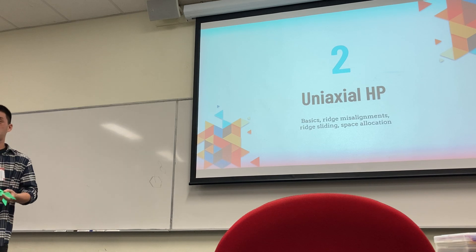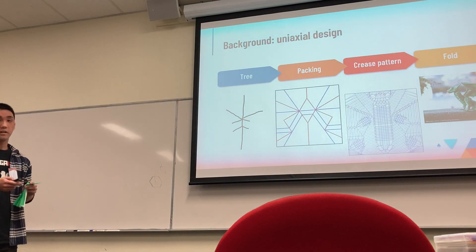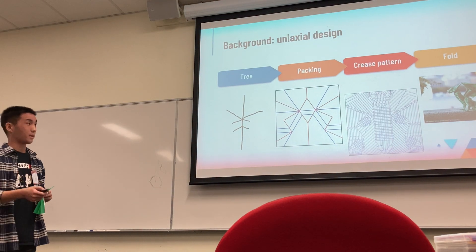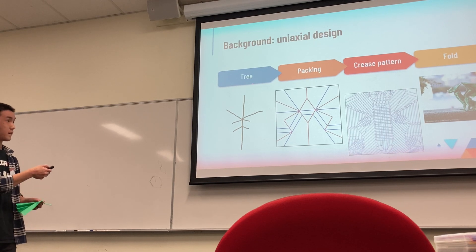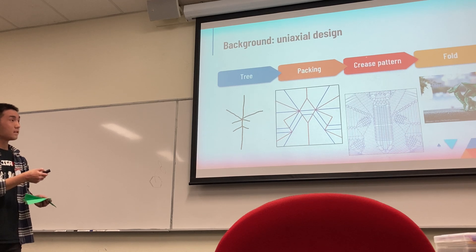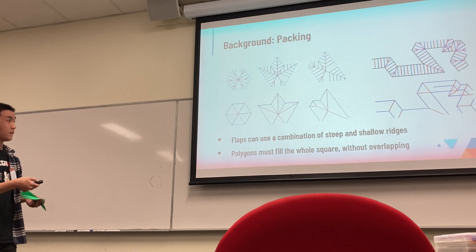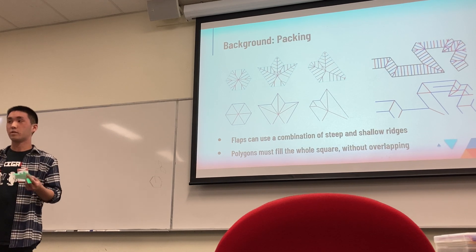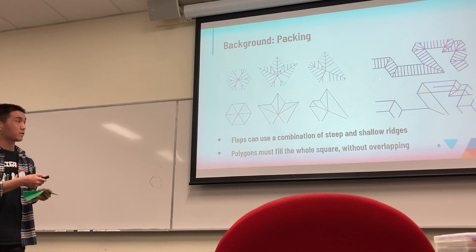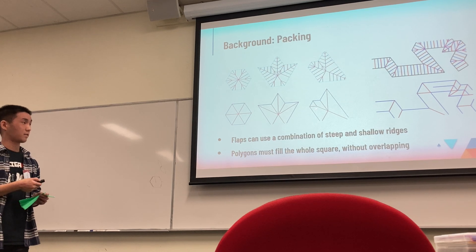Now let's look at newer techniques of uniaxial hex pleating. When designing uniaxial models using circle packing, box pleating, or hex pleating, we start with a tree figure, pack it so each block represents a polygon, turn the packing into a crease pattern, fold it, and get a final model. In hex pleating, you can combine steep and shallow ridges in various ways. However, when packing with only steep ridges, ridges may not end on grid points — ending in the middle of a cell — which makes a valid crease pattern impossible.